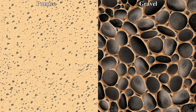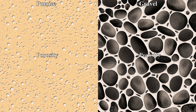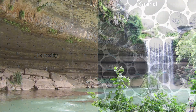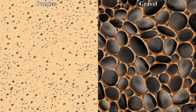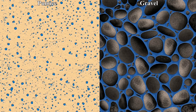The two most important properties are porosity and permeability. Porosity is a measure of the volume of empty space, or pore spaces, inside the rock. Pore spaces can be openings between grains, fractures in the rock, and even caverns. Porosity represents the volume of water a rock formation can hold.